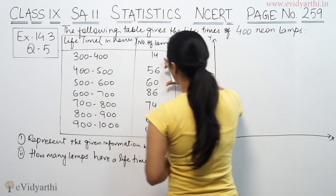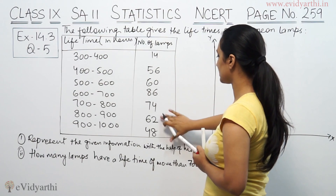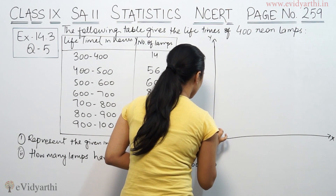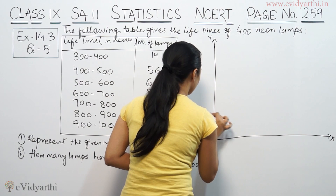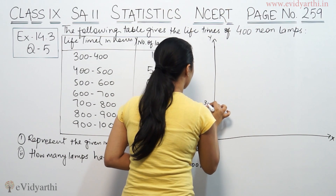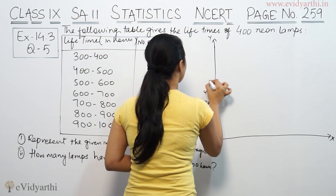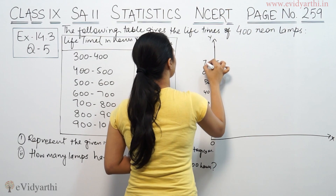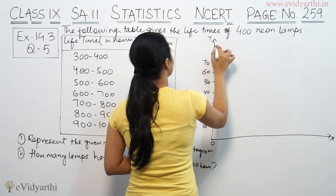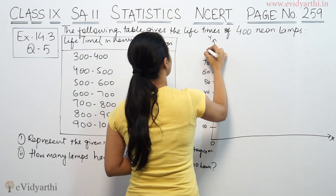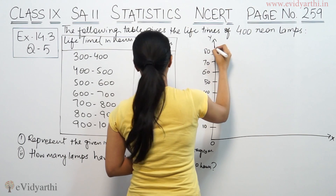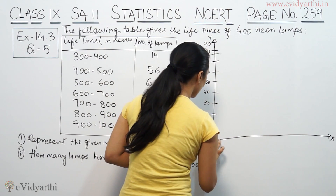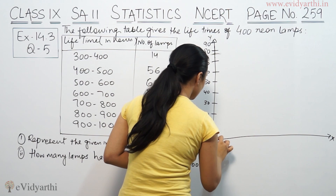On the y-axis, we plot values: 10, 20, 30, 40, 50, 60, 70, 80, 90, and 100. The scale starts from 300.